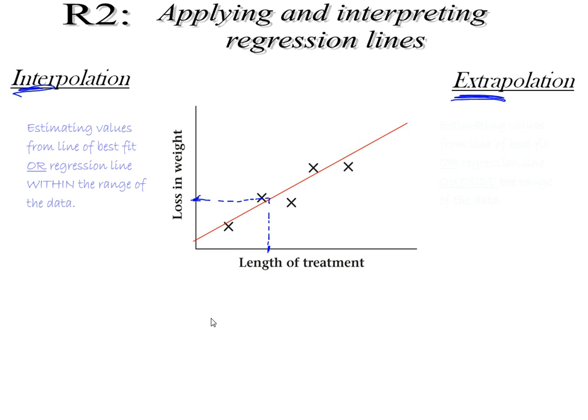And this would be our prediction for their loss in weight. That is interpolation. It's estimating values from the line of best fit or from the regression line within the range of the data. This value was less than the largest value in my data and more than the smallest. It's within the range, and I can do that fairly reliably. The stronger the correlation, the more reliably I can do that.